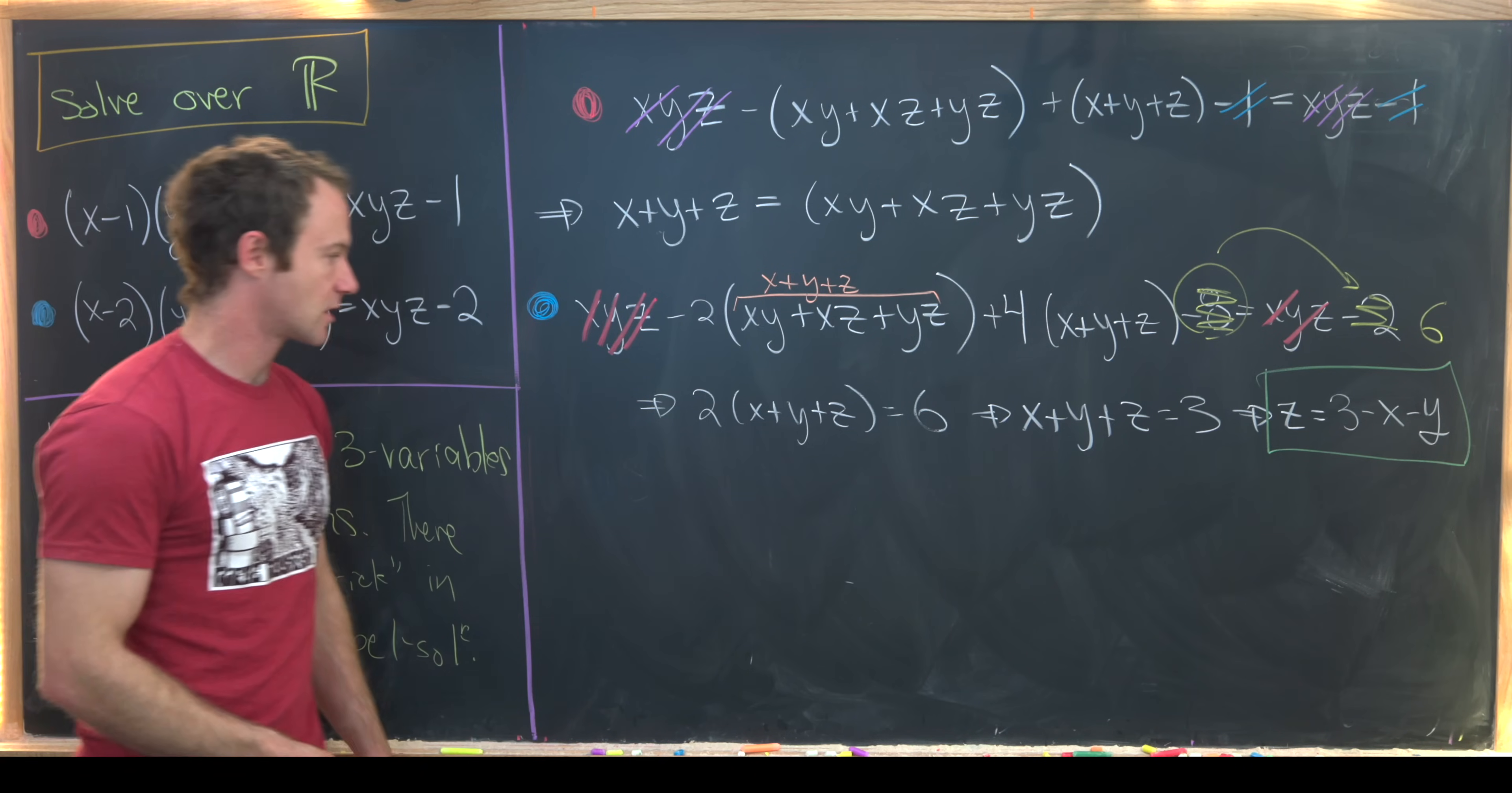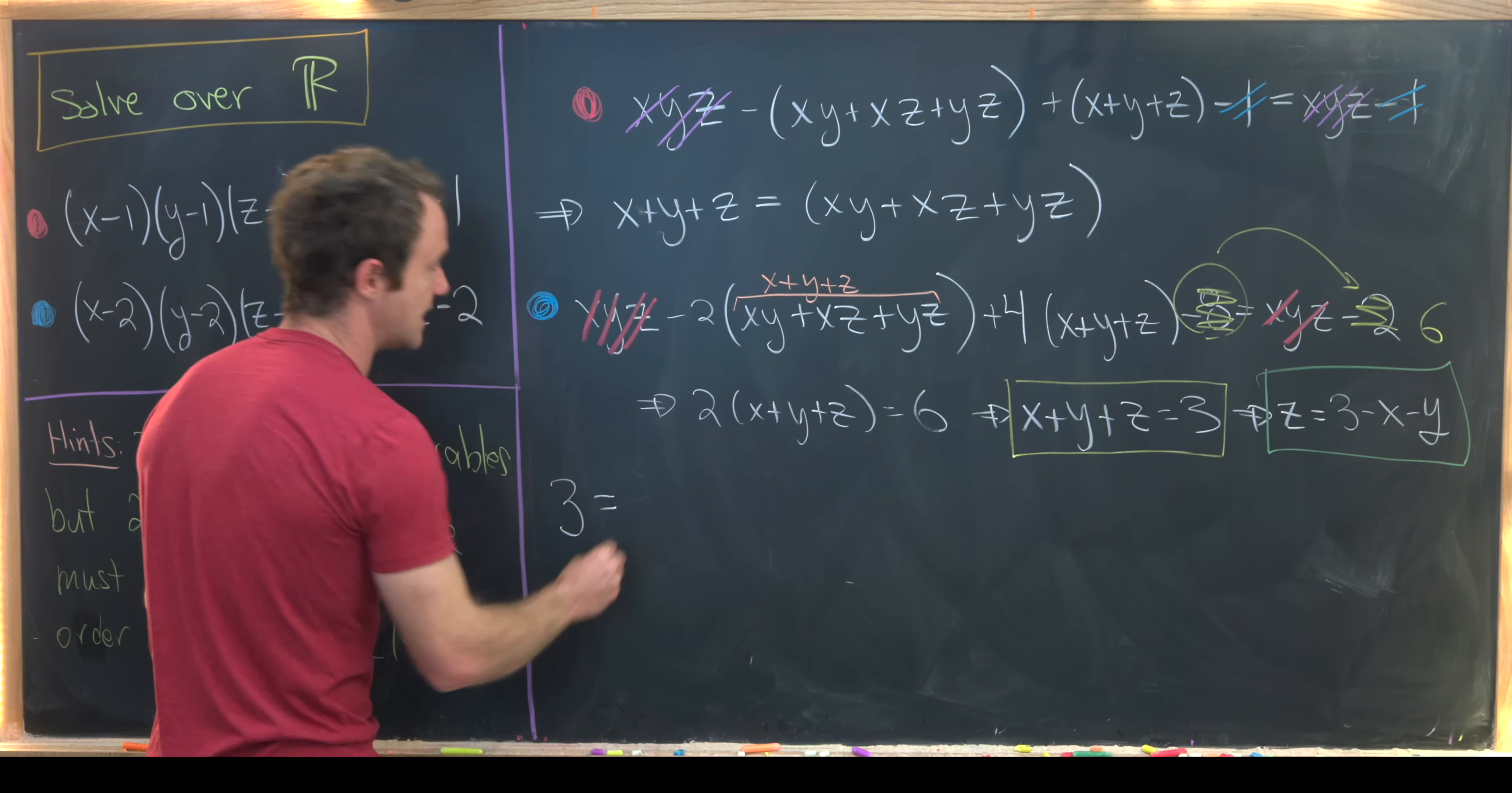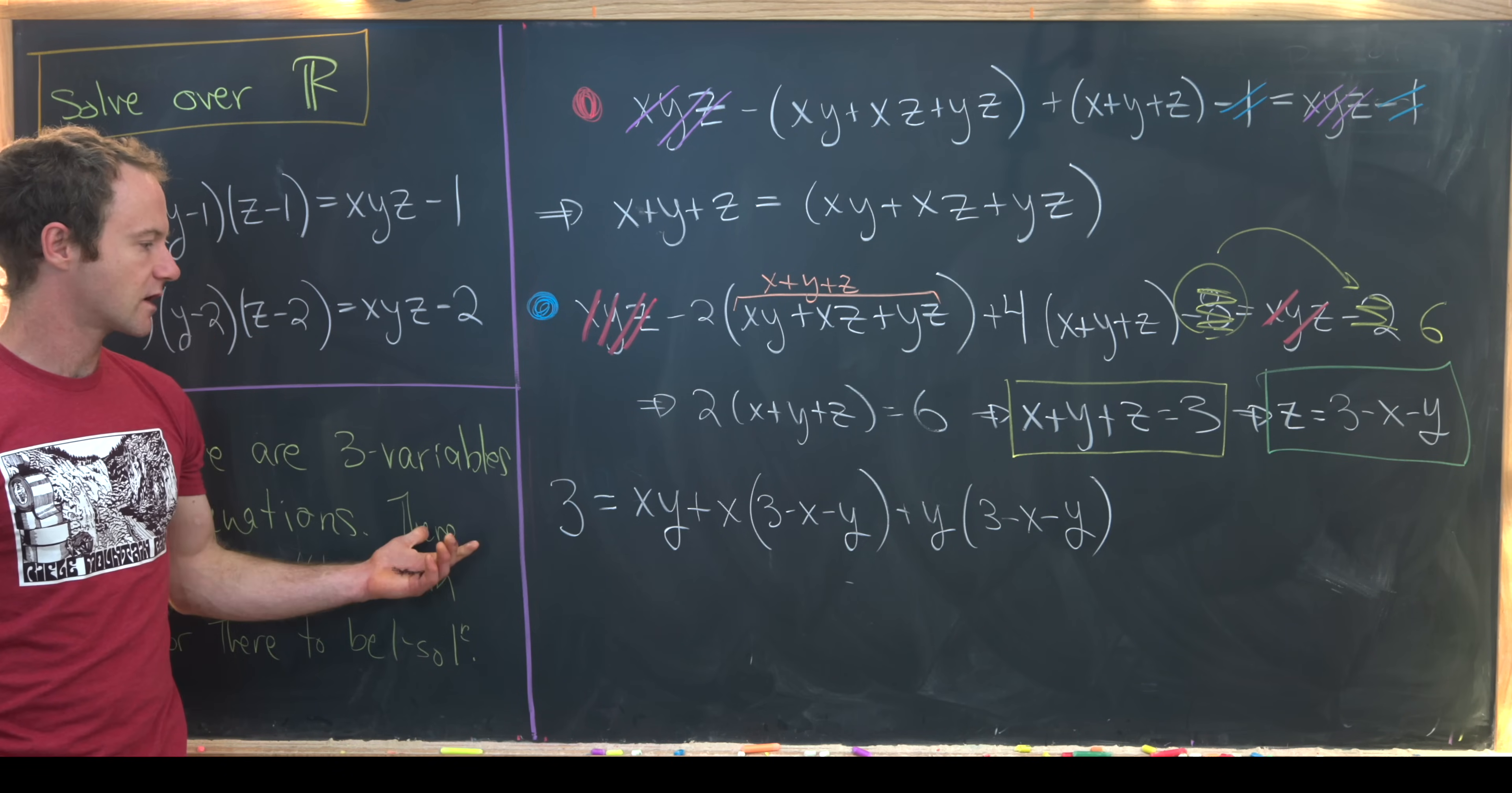From here, we will plug in this fact and this fact into our equation from the red dot. Notice that will give us 3 equals xy + xz + yz. We're going to have xy, and xz can be rewritten as x(3 - x - y), and yz can be written as y(3 - x - y). So now where can we go from here?